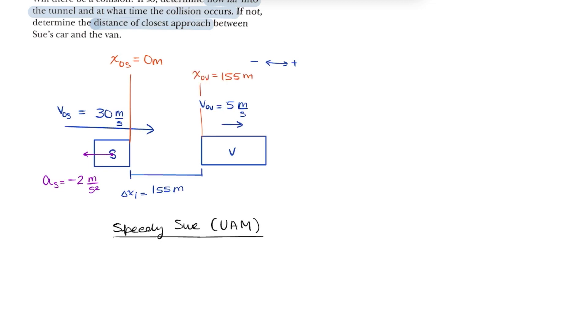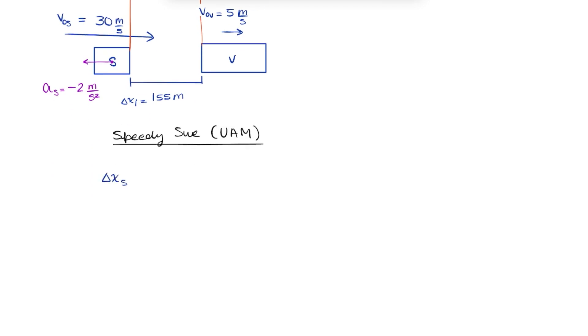Now let's write a UAM equation for Sue's car. Her displacement equals initial velocity times time plus 1 half acceleration times time squared. We can write the displacement as final position minus initial position and copy down the rest. Then we know her initial position is 0, so that term just cancels out.